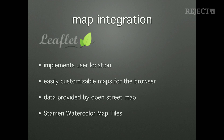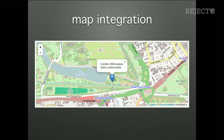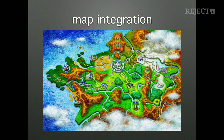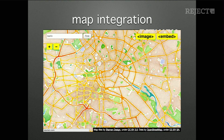A big plus is the data is provided by OpenStreetMap, so the data comes from really different people and it's open. Also, it's pretty easy to include Stamen and watercolor map types. So map integration — this is how it ships, which is pretty beautiful already. But I wanted something like this — this is how the Pokemon world looks nowadays, it's with color. So I included the Stamen map tiles. This is how it looks, and it was actually pretty easy to include.